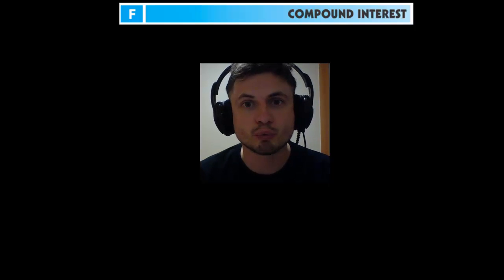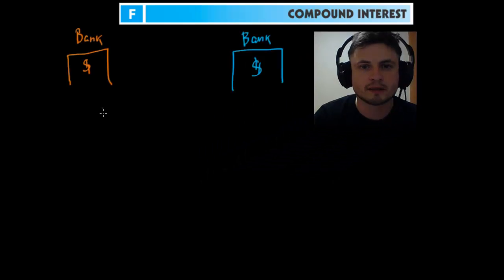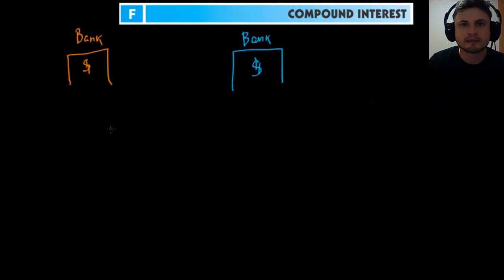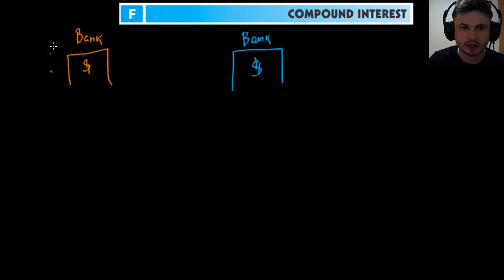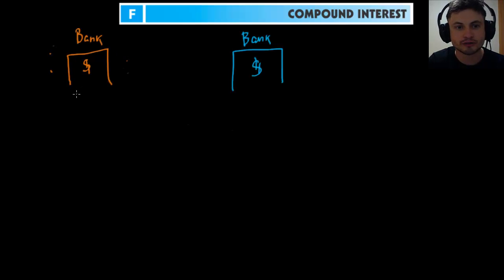Welcome to 'What the Math' — let's talk about money. Imagine there are two banks. This bank, Orange Bank, all fancy and shiny, offers you something called a simple interest rate.